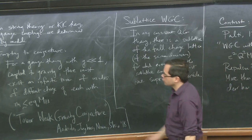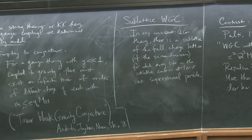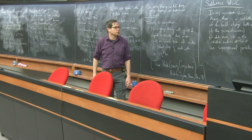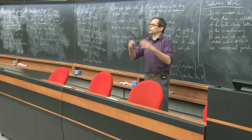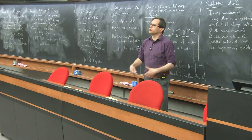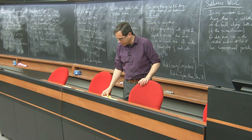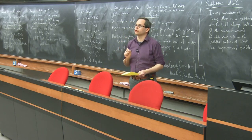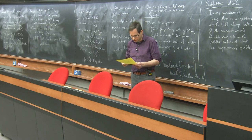That's along the lines of the tower conjecture but a little bit sharper — it's saying these can't just have any random set of charges. There should be some sublattice, maybe all multiples of charge two, maybe all multiples of charge three, but there's some sublattice for which you can find a particle obeying the Weak Gravity Conjecture for every site in that sublattice.